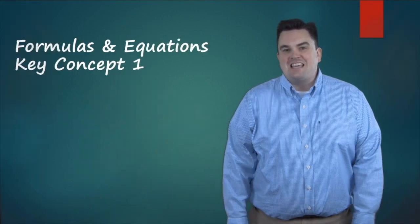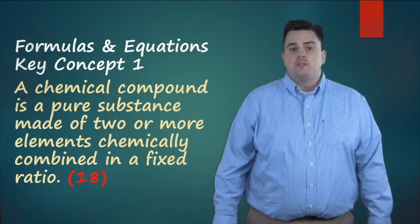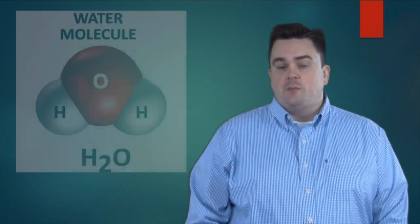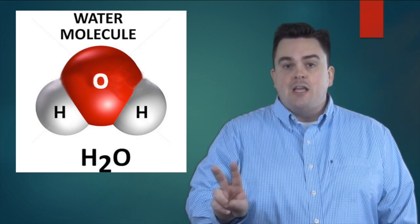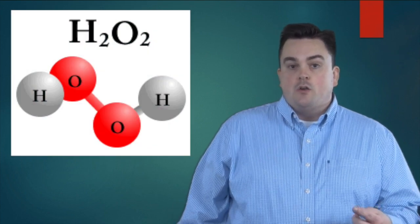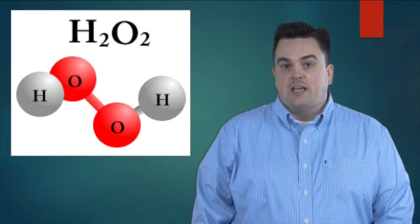Formulas and Equations Key Concept 1. A chemical compound is a pure substance made of two or more elements chemically combined in a fixed ratio. To make water, you have to have the elements hydrogen and oxygen. You have to have two hydrogens for every one oxygen atom in a water molecule. If you have two hydrogen atoms and two oxygen atoms, then you have a different substance called hydrogen peroxide. Every chemical compound has its own fixed ratio of elements in that compound.